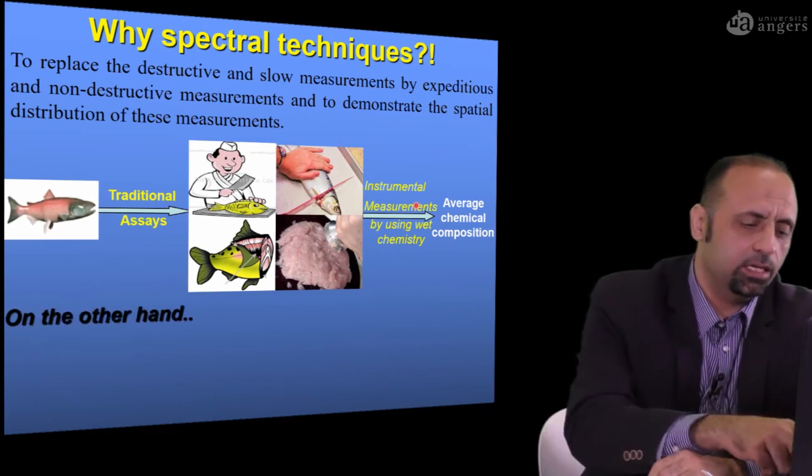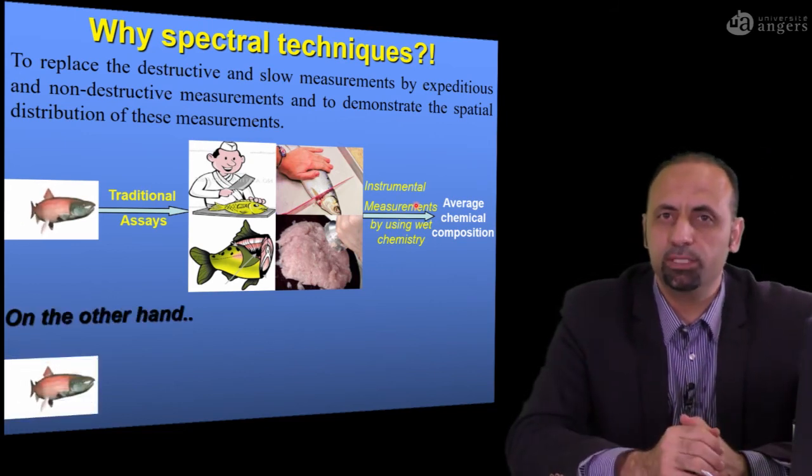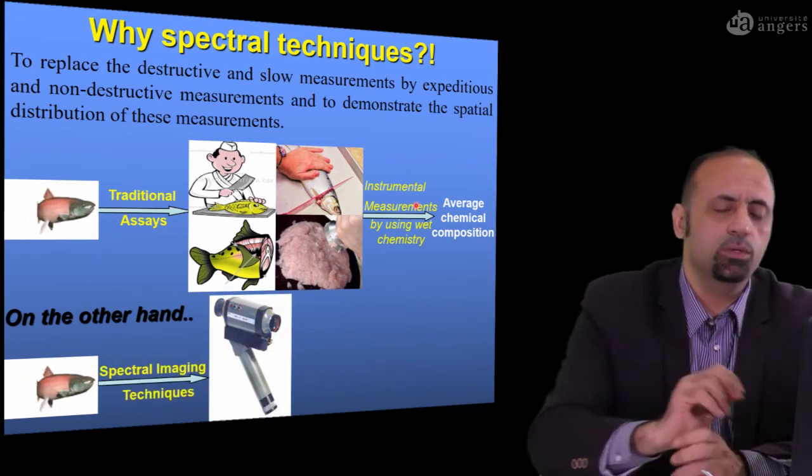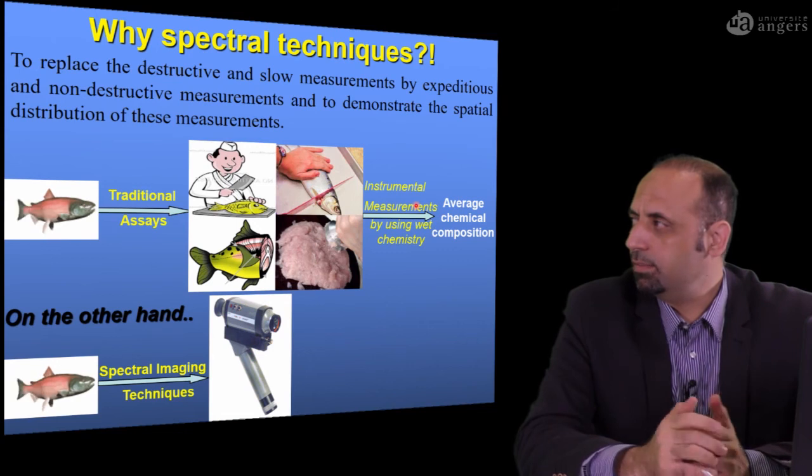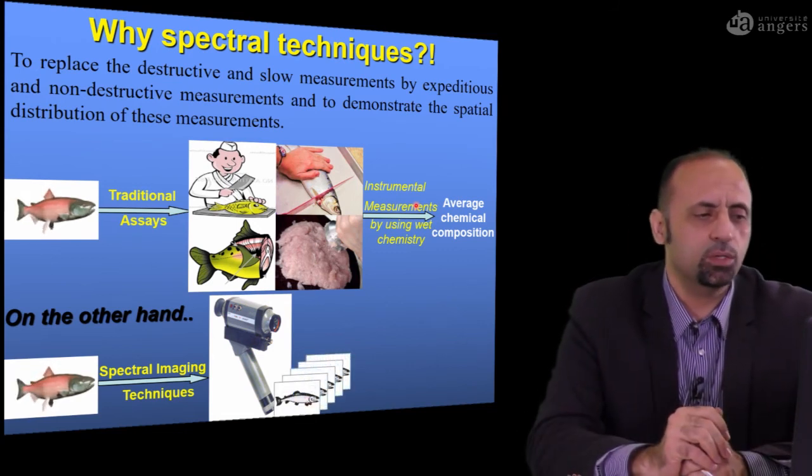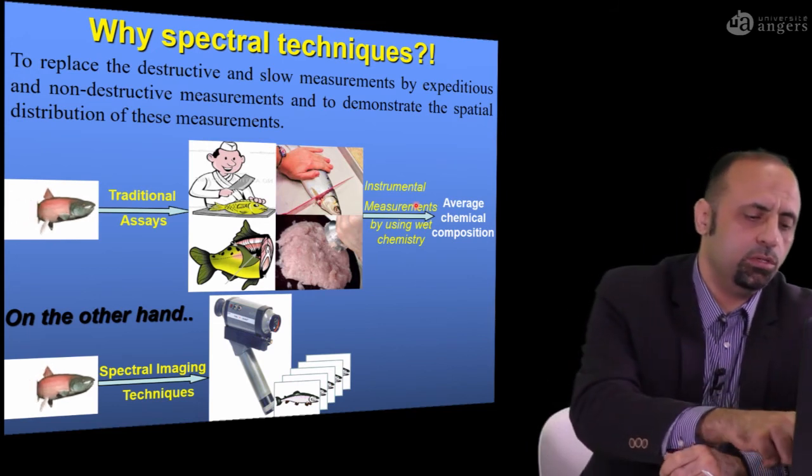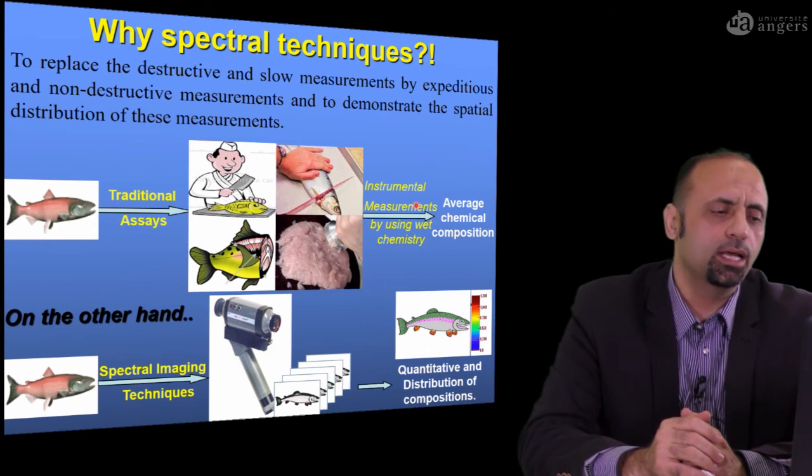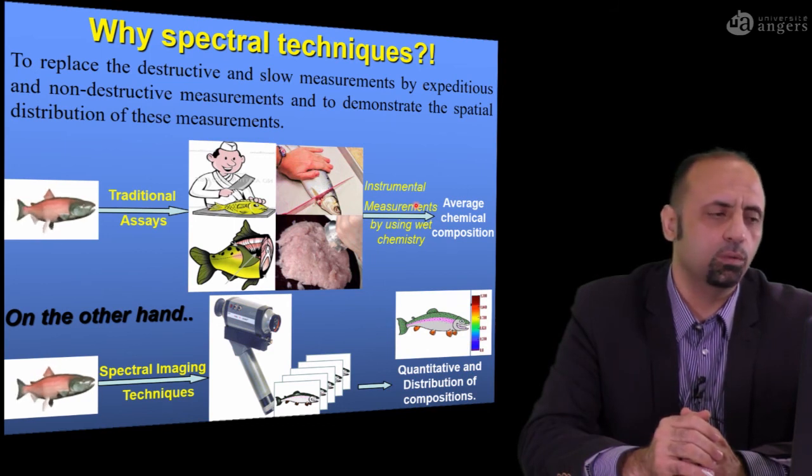On the other hand, if you need to implement spectral imaging, you have the same piece of food, and then with the remote imaging system like spectral imaging, you can acquire one image. From this one image, you are not going to obtain just the overall quality, the overall average for the whole sample...